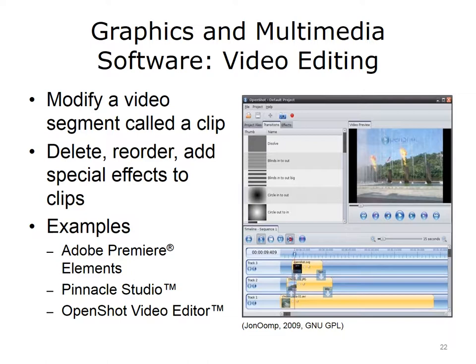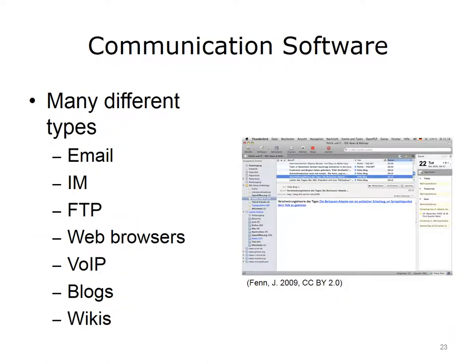Displayed is a screenshot from OpenShot. There are many types of communication software including email, instant messaging, file transfer using file transfer protocol or FTP, web browsers, voice over internet protocol or VoIP, blogs and wikis. Anything that allows users to communicate over a network would be considered communication software. The screenshot displayed is of Mozilla Thunderbird, an email application.